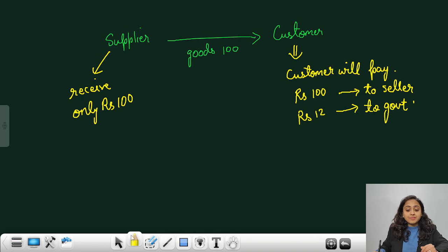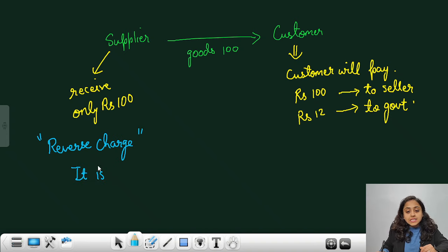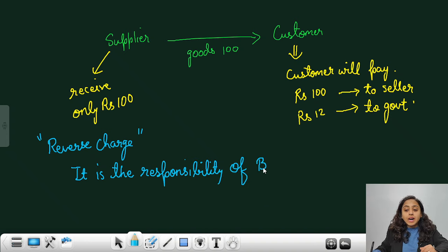The difference is that under reverse charge, it is the responsibility, it is the responsibility of buyer or you can say customer, or receiver of goods and service, to deposit GST amount. This is just the difference.